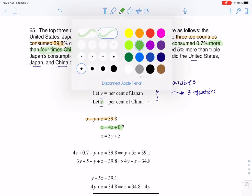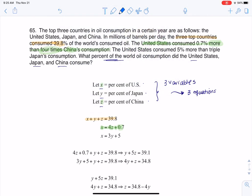And then for the third equation, it's here. It says the United States consumed 5% more than triple Japan's consumption, which is very similar to the type of sentence we just had. So again, the U.S., that's our x, right? This time, though, we're talking about Japan. That's our y.